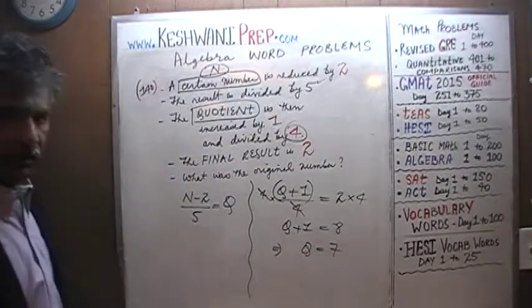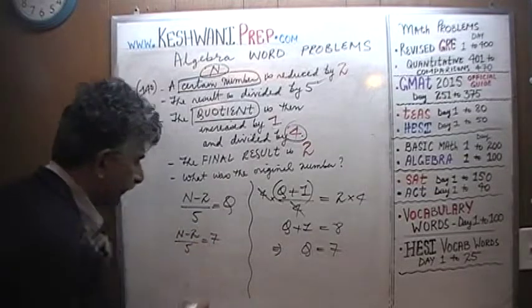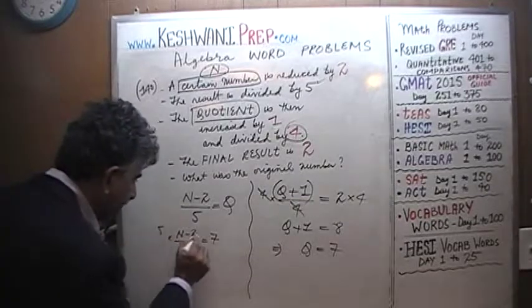So we have the value of Q. Put it in here. That's all. N minus 2 over 5 equals 7. We have to get rid of this 5 from here, from the bottom. Let's multiply both sides by 5.